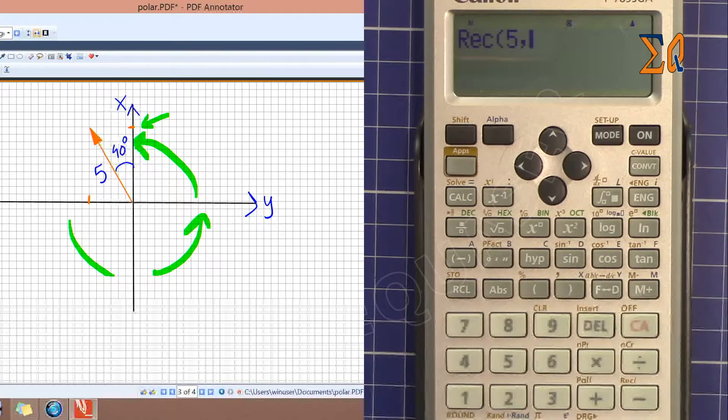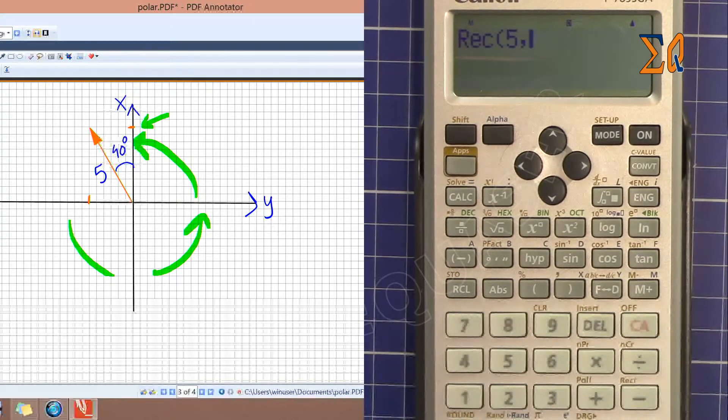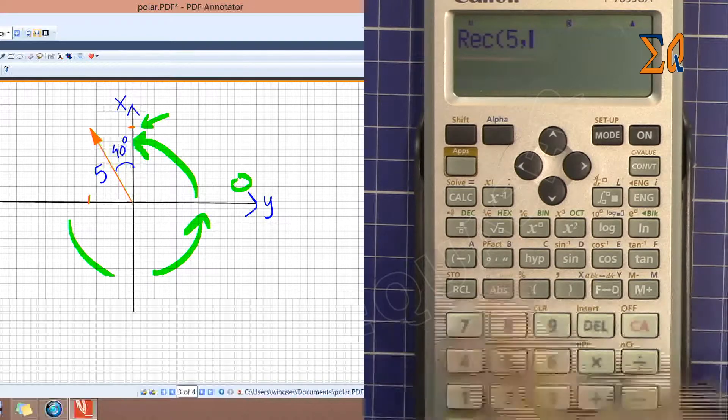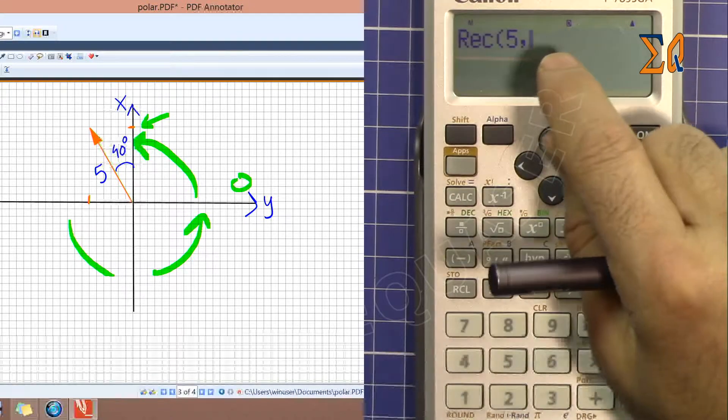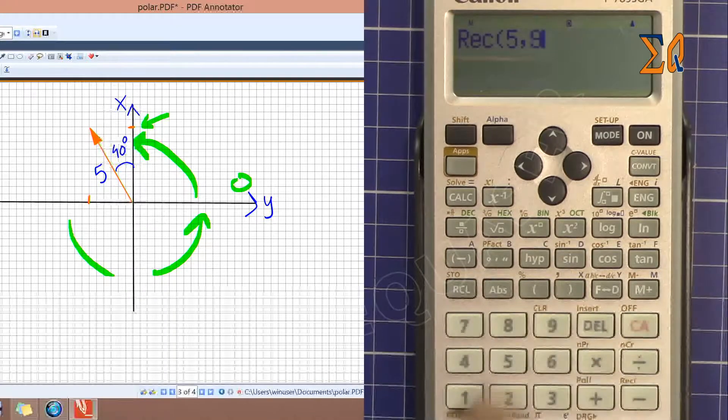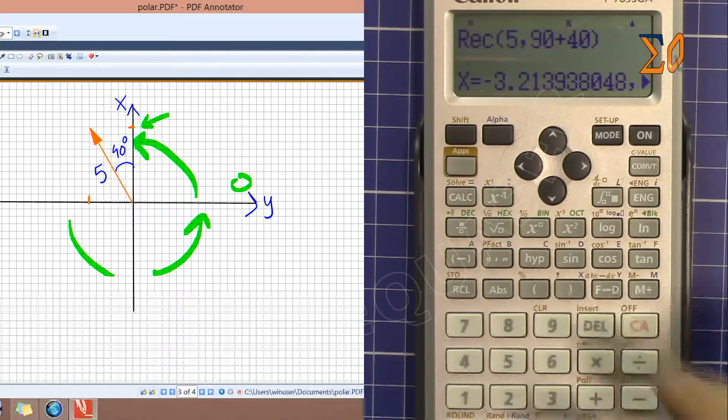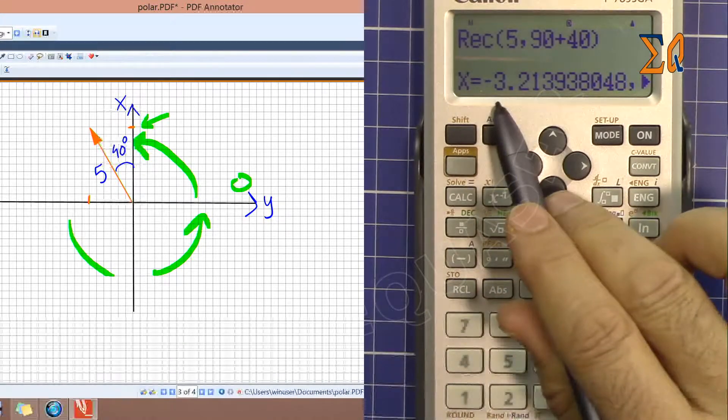The theta here is not 40 degrees. The angle starts from zero, starts from here and it goes counterclockwise, so we have to have 90 plus 40. Either calculate it in your mind and then put it here, or you can directly put it here. So 90 plus 40. So now we are getting x is minus three point something, which is correct, so we are here on the left side.